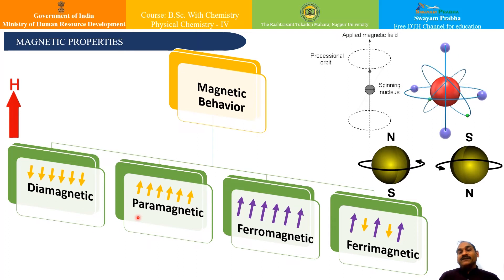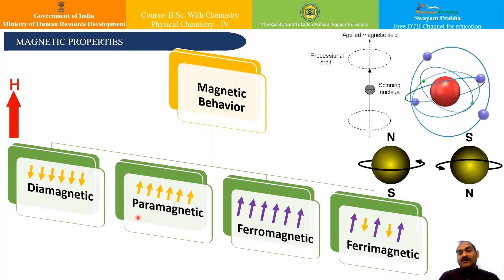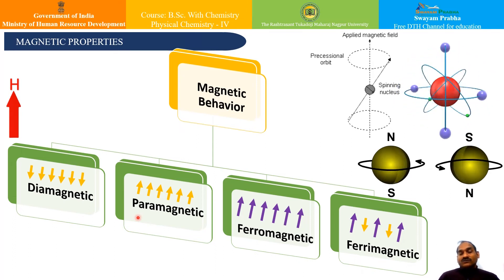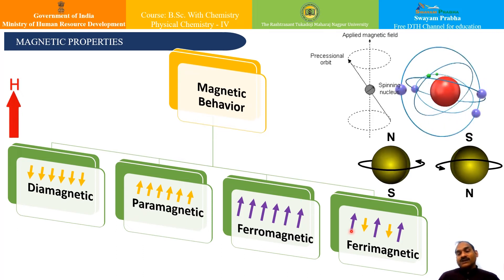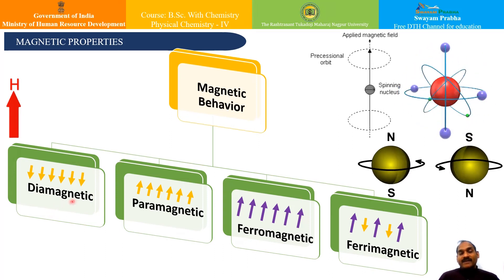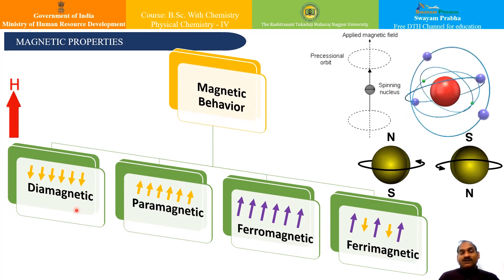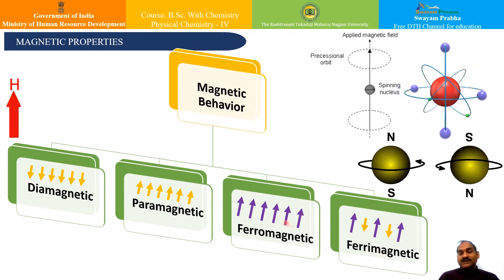Different substances react in different manners with the applied magnetic field, so their behavior is of several types. In this lecture, we will see what substances, when put into the magnetic field, act as diamagnetic, paramagnetic, ferromagnetic, or ferrimagnetic substances, and what these terminologies and arrows indicate. Let us see one by one.